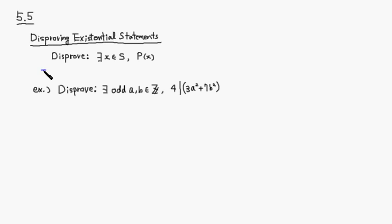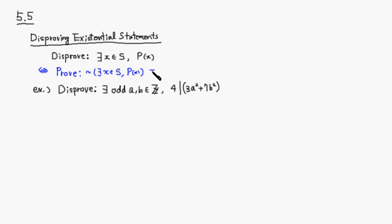This is equivalent to proving its negation. So it's: not there exists x in S such that P of x is true, which is logically equivalent to — we learned how to negate existential statements — for all x in S, not P of x is true.